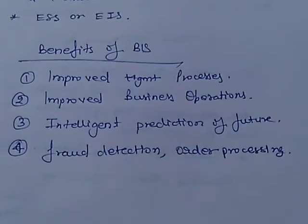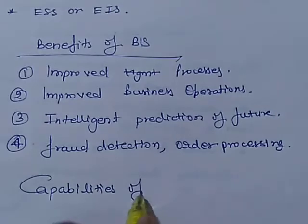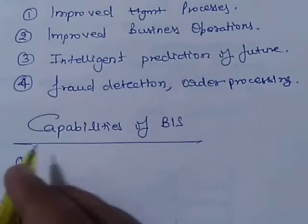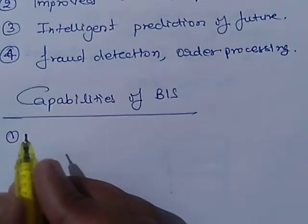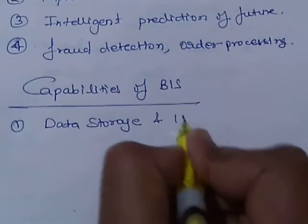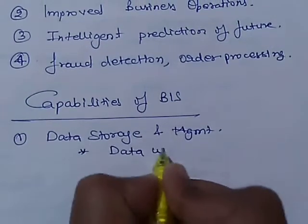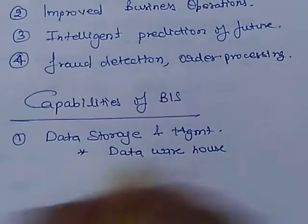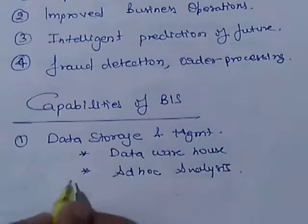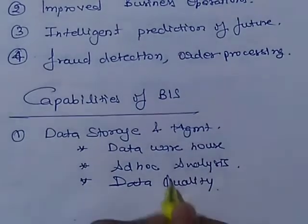Now, what are the main capabilities of the Business Intelligence System? The first capability is data storage and management. In this, we can use a data warehouse, ad hoc analysis, and data quality tools.